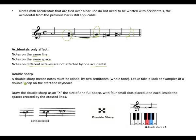A double sharp means the note must be raised by two semitones, which is a whole tone. To draw the double sharp on the staff, draw it as an X the size of one full space. Then place four small dots, one on each side of the X, inside the spaces created by the cross. Both the X with dots and a plain X are accepted forms of the double sharp sign.